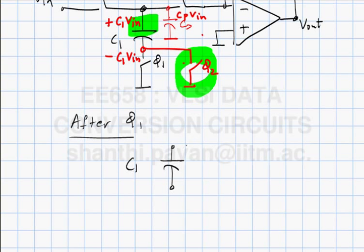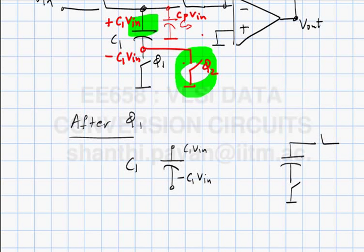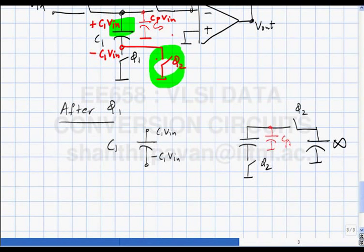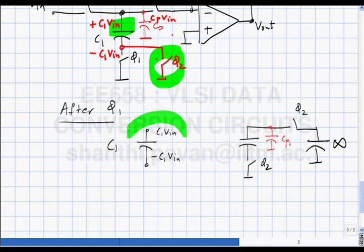After phi1 we have access to both plates of C1: the top plate has charge C1·Vin, the bottom plate has -C1·Vin. A capacitor has two plates with equal magnitude of charge, only the sign is different. If you are not too particular about the sign of the amplifier gain, it hardly matters whether you push in C1·Vin or -C1·Vin.